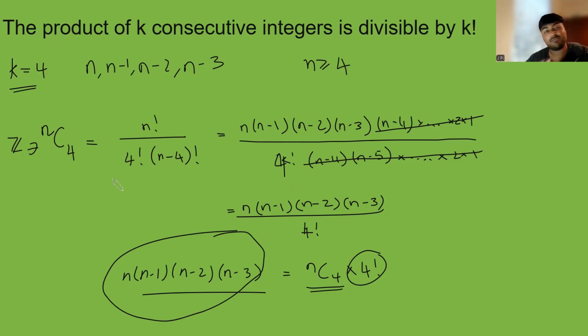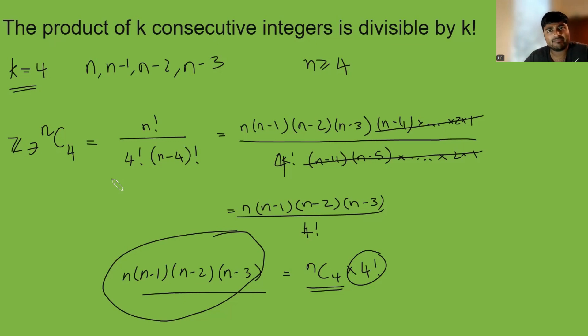And you can basically rinse and repeat this, replacing all the 4s with k's, and you get the case where k is any arbitrary positive integer.